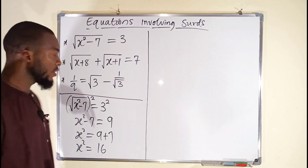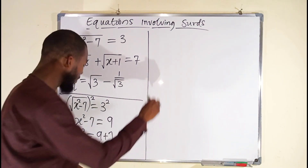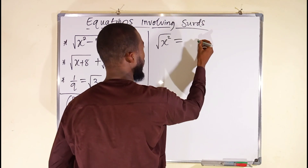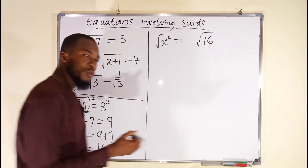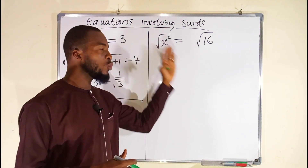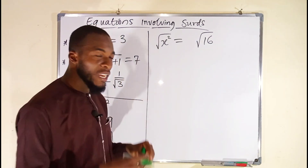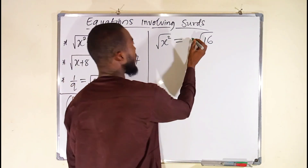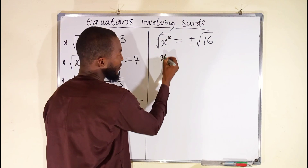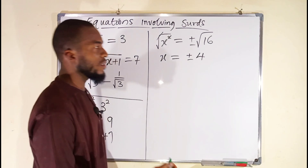But we are looking for x, not x squared. So to eliminate this power of 2, we take the square root of both sides: square root of x squared equals square root of 16. Remember, whenever you are introducing a square root of a number that does not already contain a square root in an equation, you have to add plus or minus. The square roots cancel, giving x equals plus or minus 4, because the square root of 16 is 4.